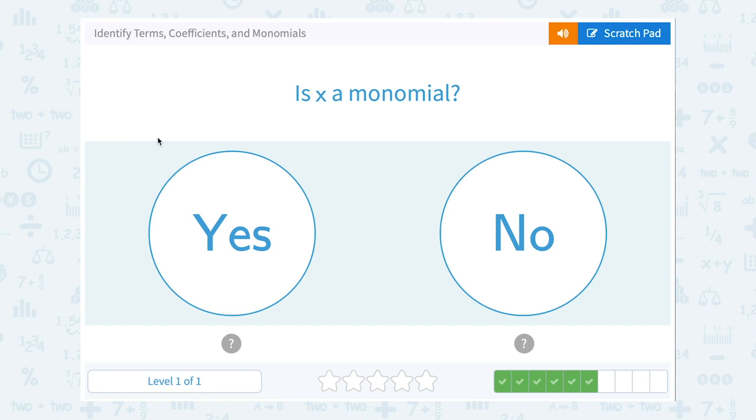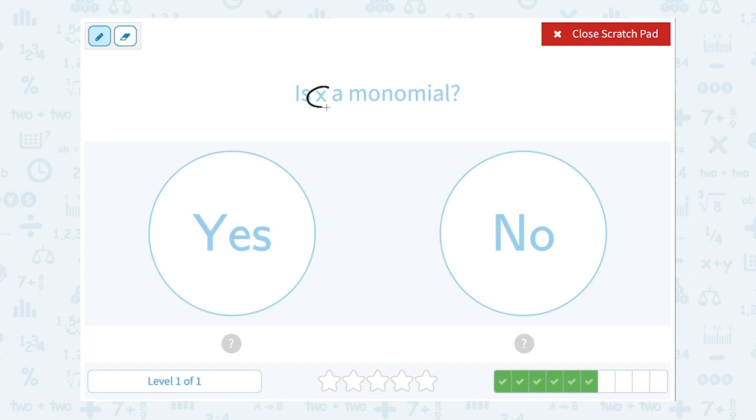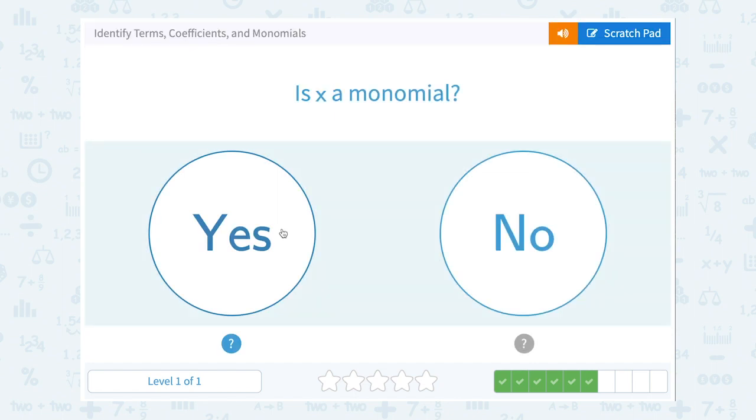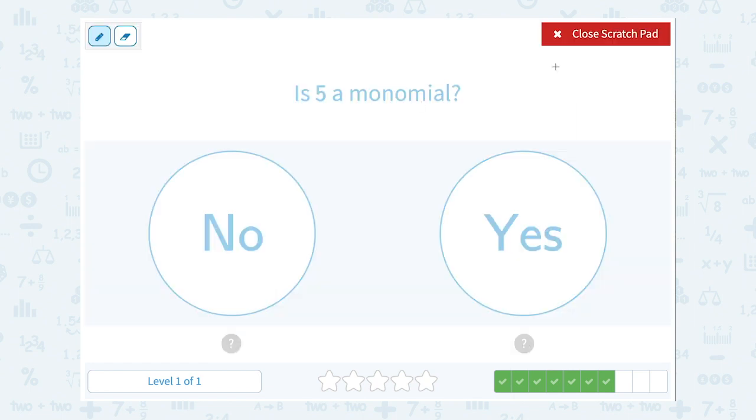Is x a monomial? Well, again, there's no plus or minuses, right? It's just one thing, so yes, it's one term, or a monomial. Is 5 a monomial? Again, it's only one term, so yes.